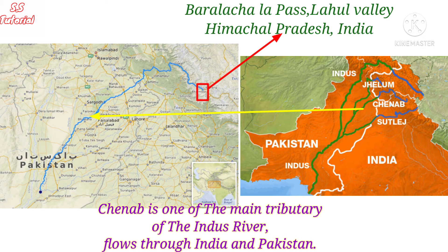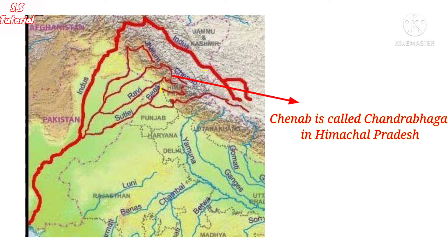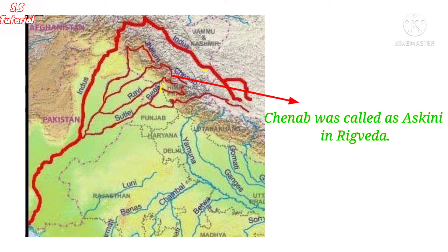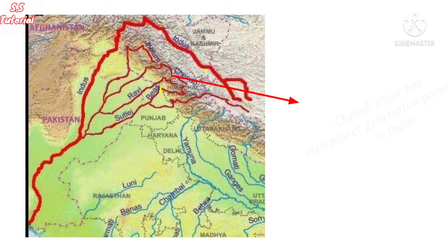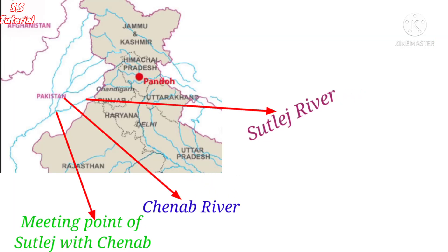The Chenab is a most important tributary of the Indus river which flows in India and Pakistan. It originates from the Bara Lacha Pass in the Lahaul valley of Himachal Pradesh, from the confluence of two rivers: the Chandra and the Bhaga. It is also known as the Chandra Bhaga river in Himachal Pradesh and is almost 1,180 kilometers long. The Chenab was also called Askeni in the Rig Veda, meaning it was seen to have dark-colored water. The Salal Dam on the Chenab has a 690 megawatt hydroelectricity power generation capacity. After flowing through Pakistani Punjab, it joins with the Satlej river.